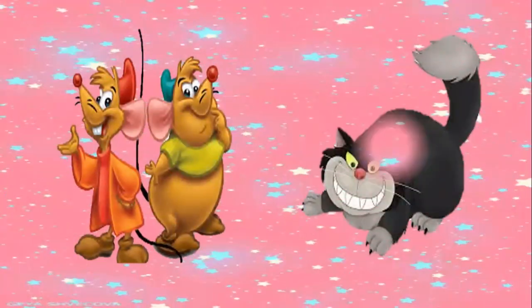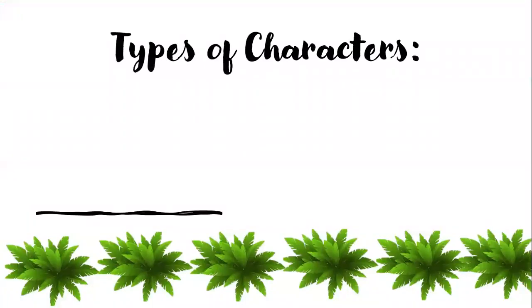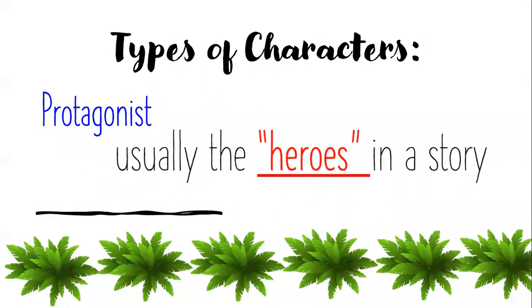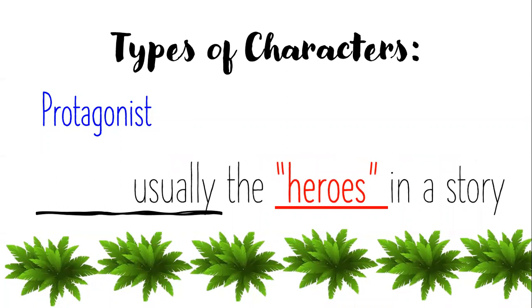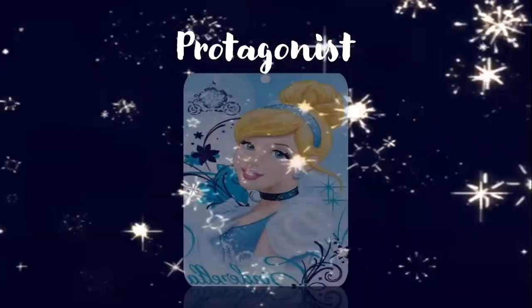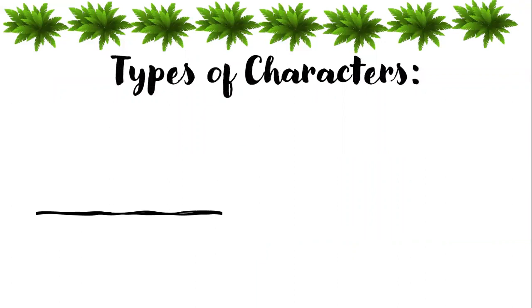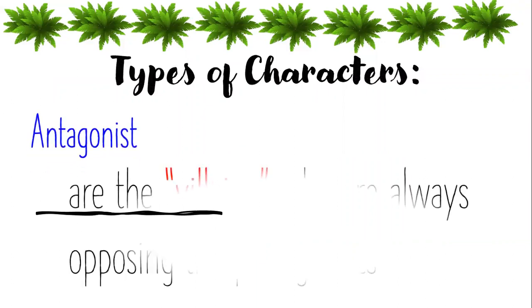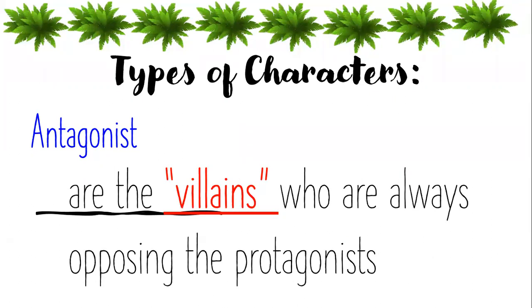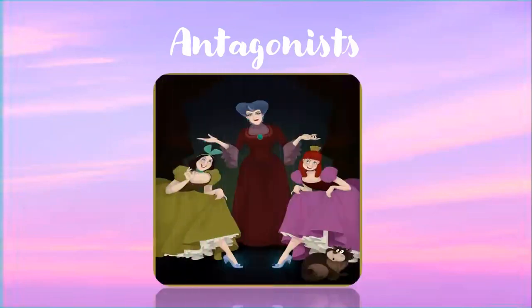We also have Jack and Gus, and Lucifer. We also have types of characters. We have first the protagonist, usually called the hero or heroes in a story. So in the story Cinderella, our protagonist is none other than Cinderella. Another type of character is the antagonist — the villains who are always opposing the protagonist. In Cinderella, the antagonists are her stepmom and her evil stepsisters.